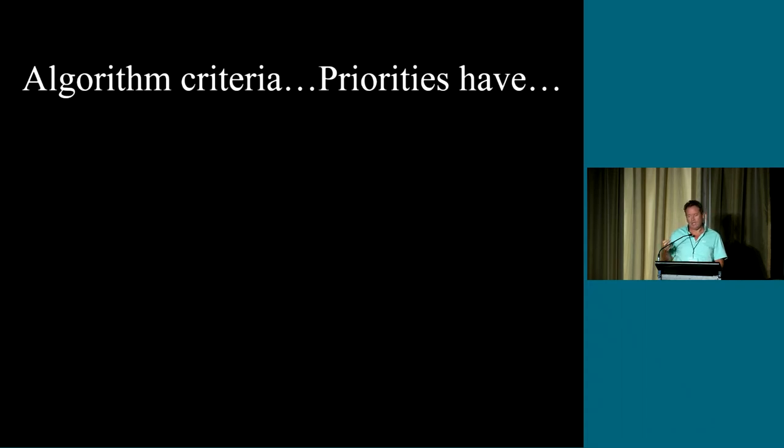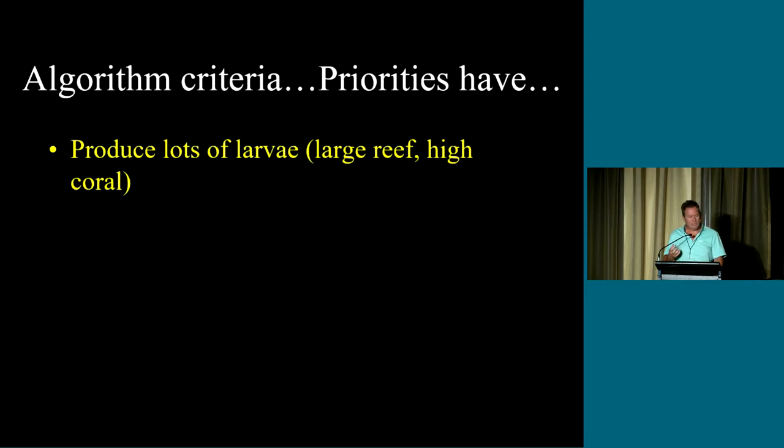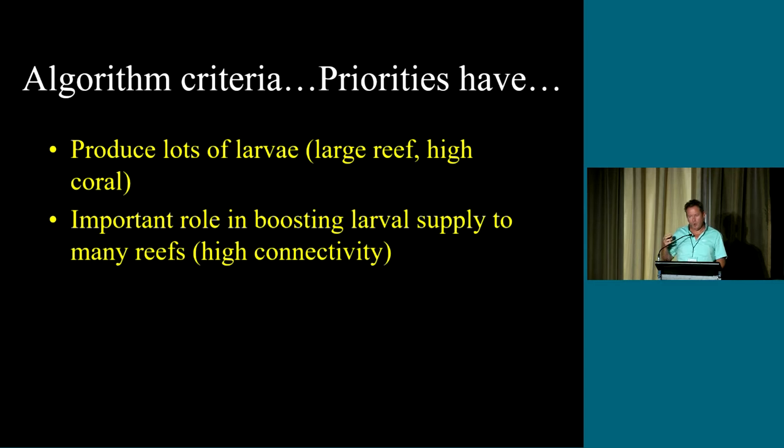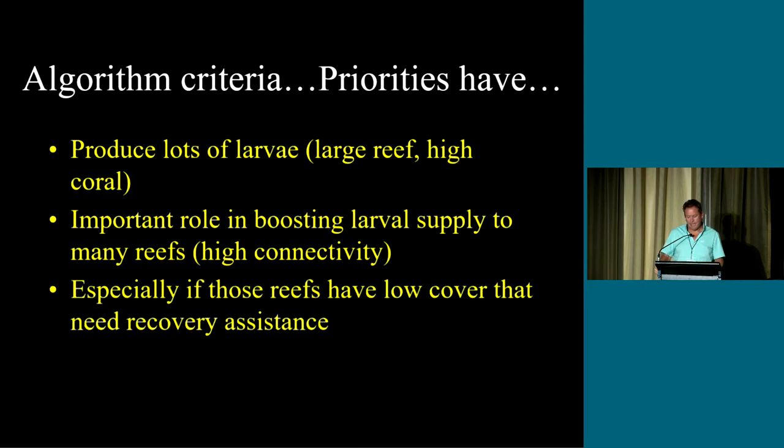It looks at every reef of the GBR and asks which are the most important source reefs for reefs in need. You would prioritize reefs that produce lots of larvae, maybe they are larger reefs with a higher coral cover. You look at whether that reef is in the right position to deliver an important contribution of larvae to reefs downstream. And also especially if the reefs that are receiving those larvae are reefs in need, reefs that have recently been damaged or are in an early stage of recovery.